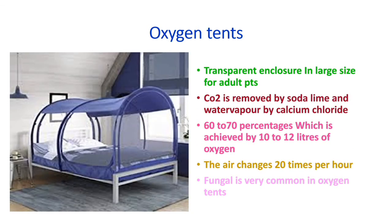Oxygen tents are transparent enclosures in large sizes for adult patients. Carbon dioxide is removed by soda lime and water vapor by calcium chloride. This oxygen tent delivers around 60–70% oxygen, achieved by 10–12 liters of O2. Air changes occur 20 times per hour, and fungal infection is very common with oxygen tents.